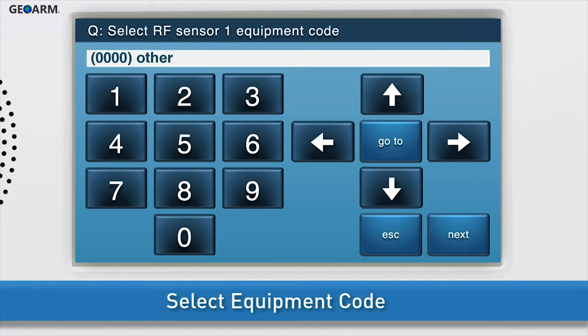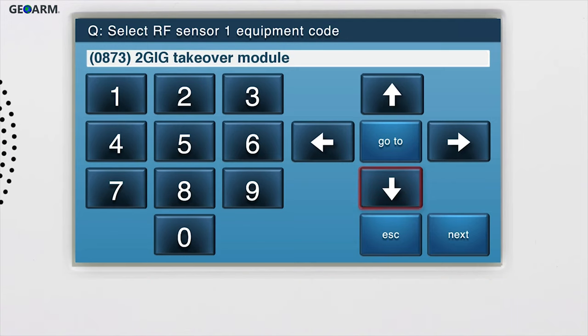Select the equipment code. Press the right arrow until 2Gig takeover module displays in the answer box. You can also type 0, 8, 7, 3 to select this option. Press the down arrow to go to the next sub-question.